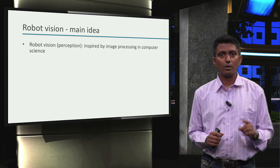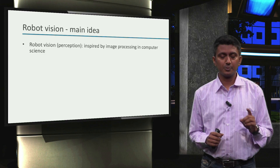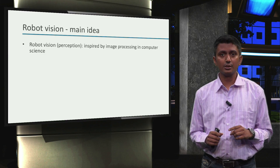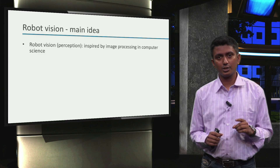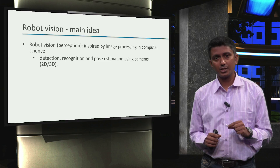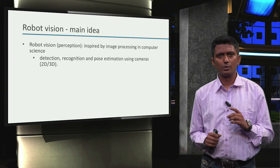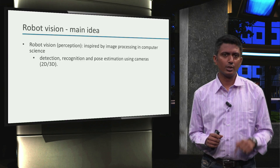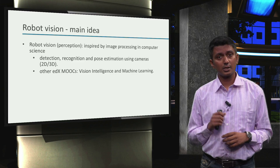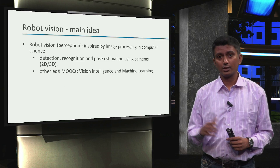Robot vision, also called perception, takes inspiration from the field of image processing in computer science. In real world applications, detection, recognition, and pose estimation are performed using information from 2D or 3D camera data. However, those concepts are too detailed to include in this course. In fact, there are other edX MOOCs that exclusively cover the topic of robot vision, such as this one.